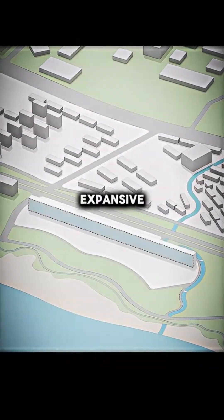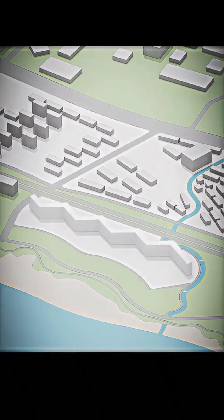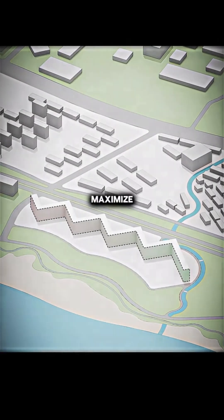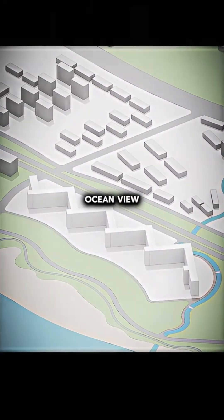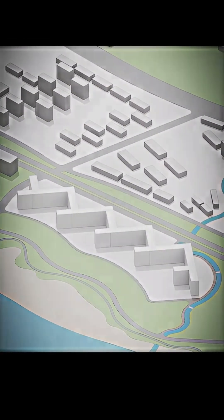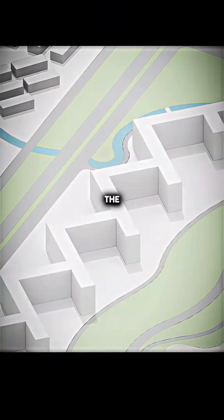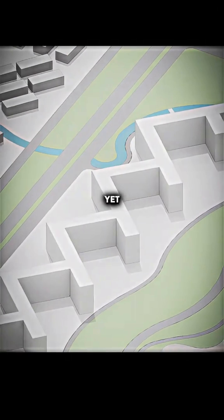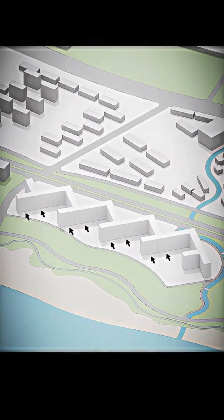Imagine a house with an expansive ocean view. If you design it with a zigzag shape, you'll maximize the sea-facing facade, creating more ocean-view homes. You can also extend the structure at the corners, forming discordant yet striking landscape courtyards between the buildings.